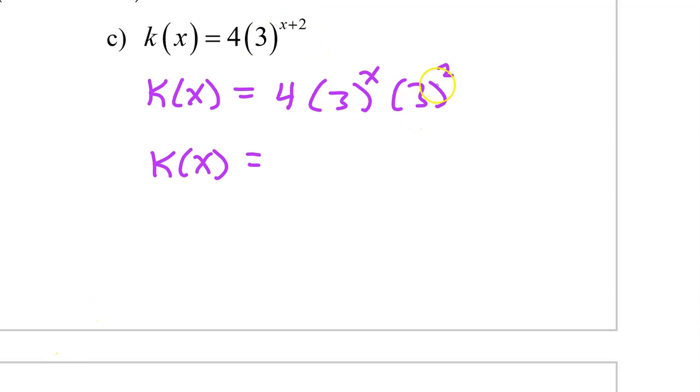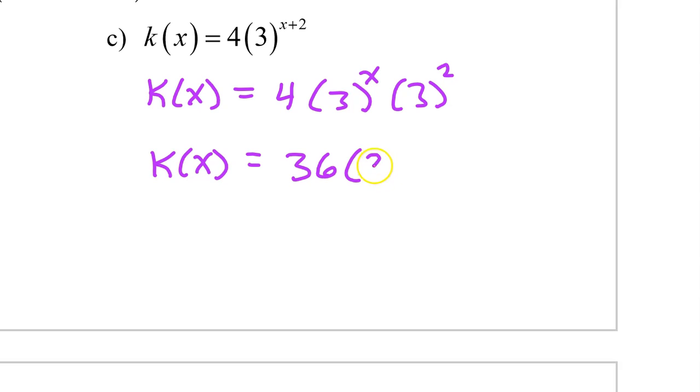3 squared is 9, and 9 times 4 is 36. So k of x is 36 times 3 to the x power.